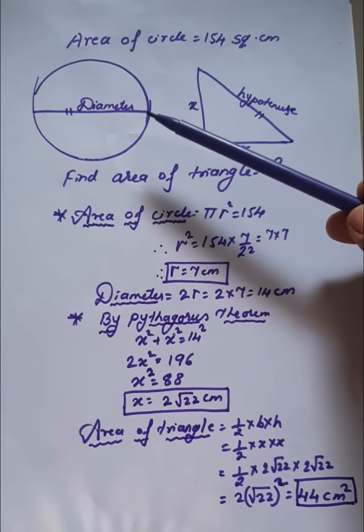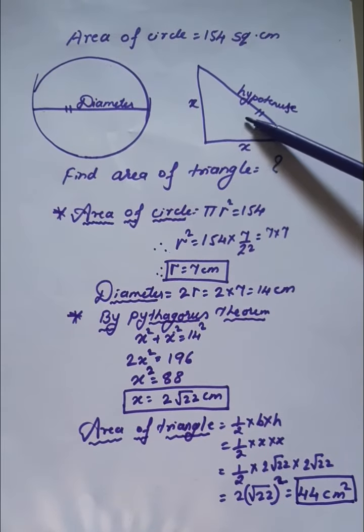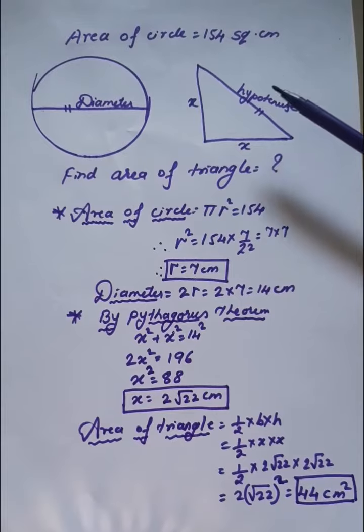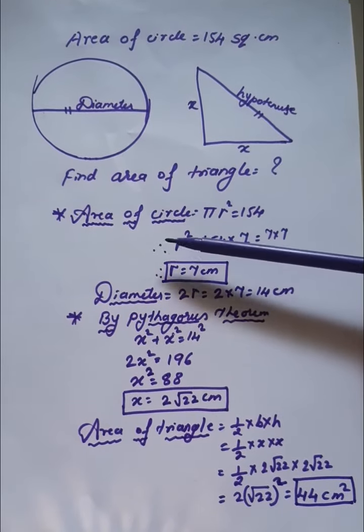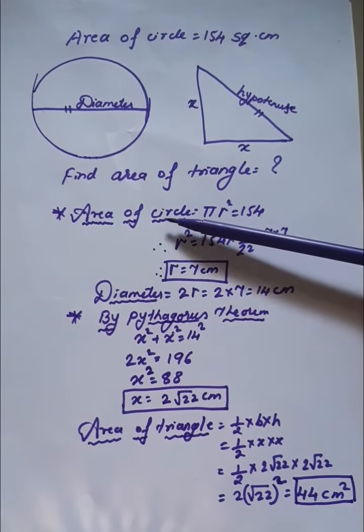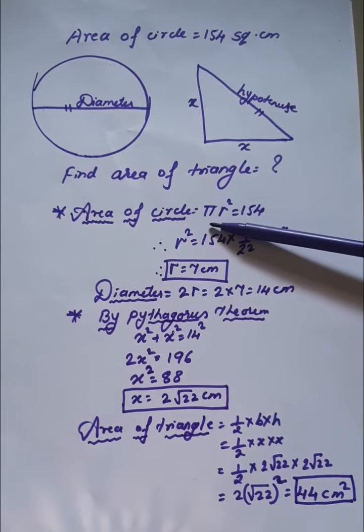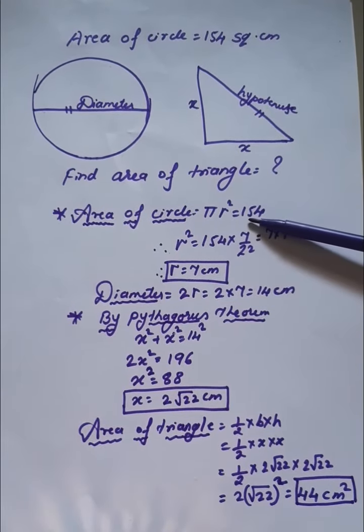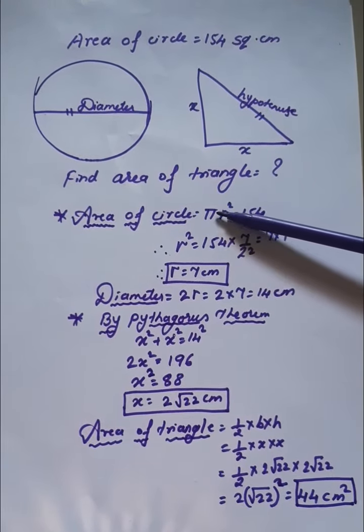The key information given is that the diameter of the circle and hypotenuse of this triangle are equal. First, we'll find the radius of the circle using the formula πr² equals 154. We know π equals 22/7.